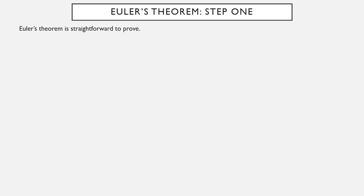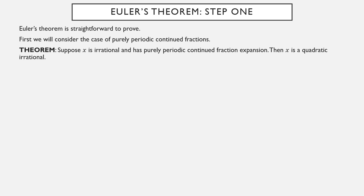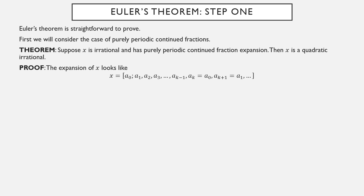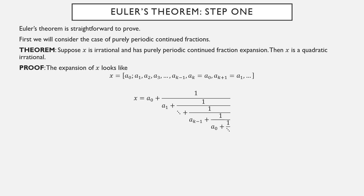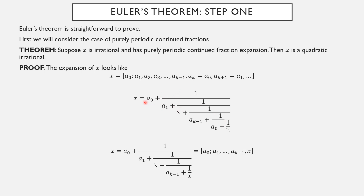The first step in Euler's theorem: if a number has eventually periodic continued fraction expansion, it is a quadratic irrational. First we consider the case of purely periodic continued fractions. Suppose x is irrational and has a purely periodic continued fraction expansion. The continued fraction looks like this: we have a_0 through a_{k-1}, but a_k = a_0, then a_{k+1} = a_1, and so forth — the block a_0 through a_{k-1} repeats. Once we hit index k, we just start repeating.